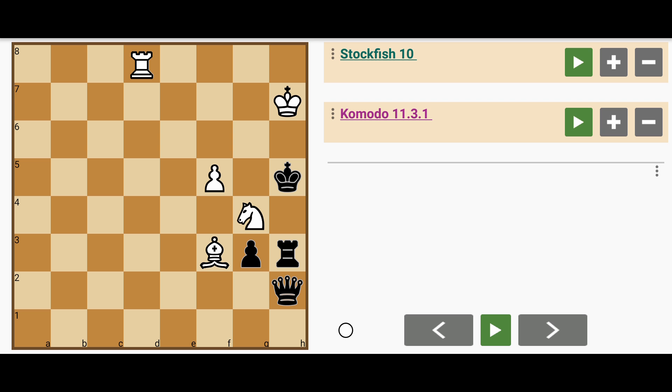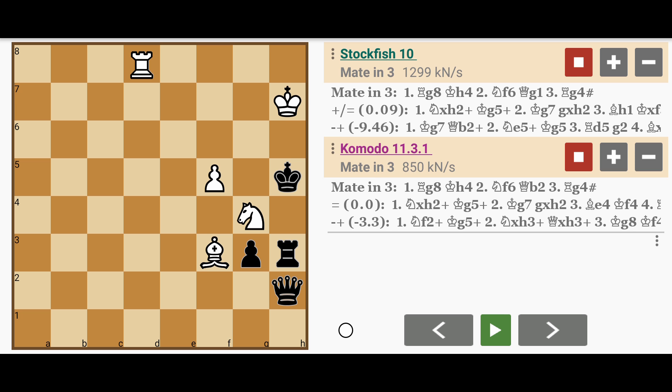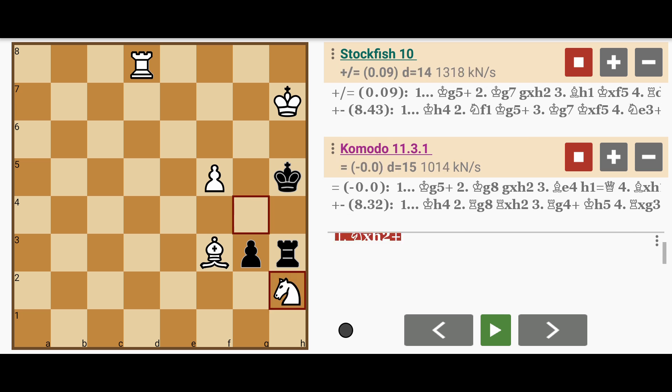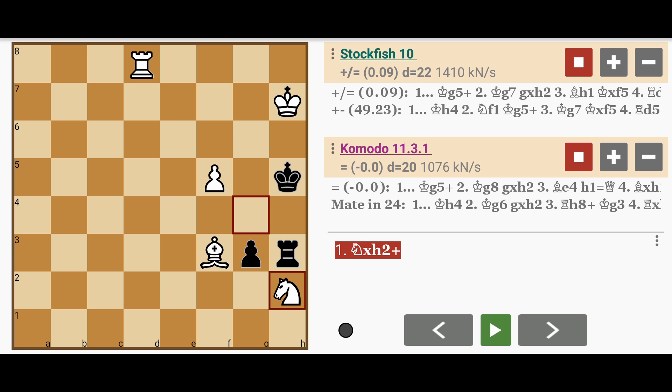I'll now show you the solution. There's actually a mate in 3 here. White must be careful not to capture the queen, which is the obvious move that probably most beginners and intermediate players would make.